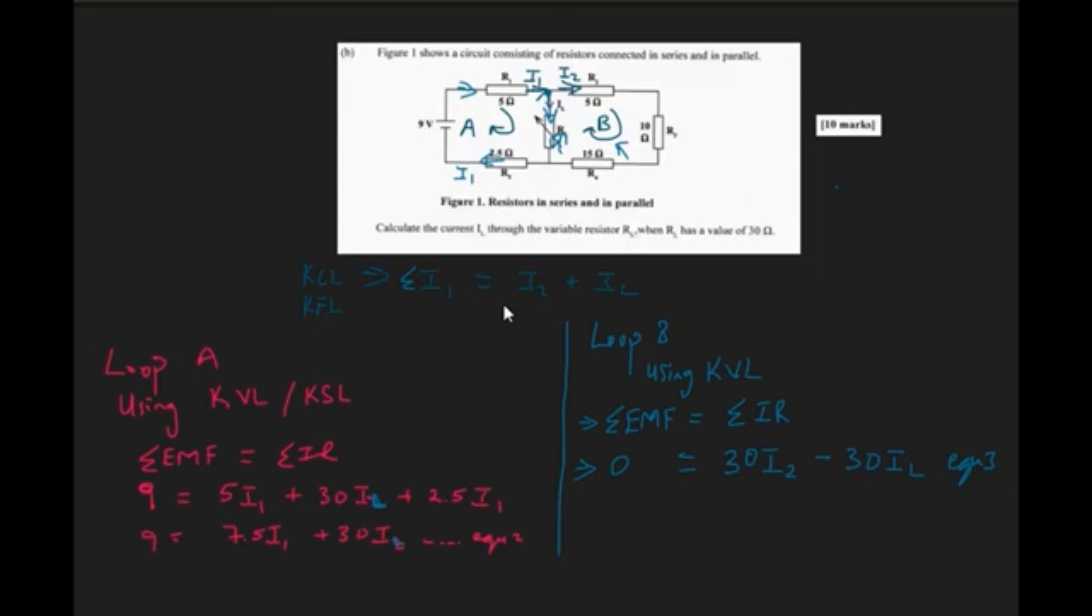Now you might be wondering, what are we going to do with these equations? Now the aim, really, is for us to find the value of IL. And so we're going to use some method of possibly substitution and see if we can best figure out what IL is. So this is what we're going to do here.